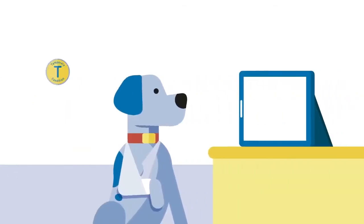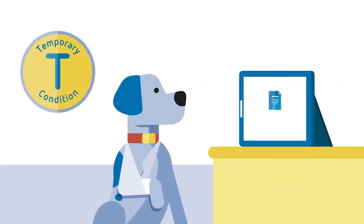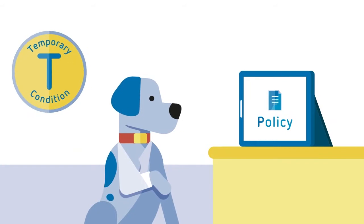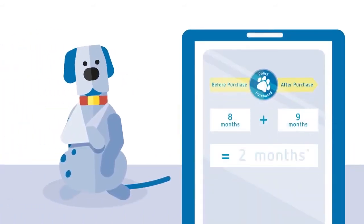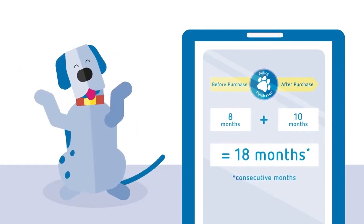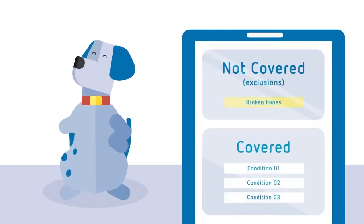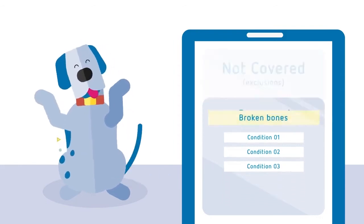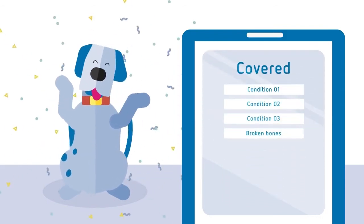A temporary pre-existing condition is a pet health condition that usually resolves with treatment. If your pet hasn't shown signs of that condition for 18 consecutive months or more, before or after your policy is purchased, it is automatically removed from your policy as an exclusion and is therefore covered for any future claims.